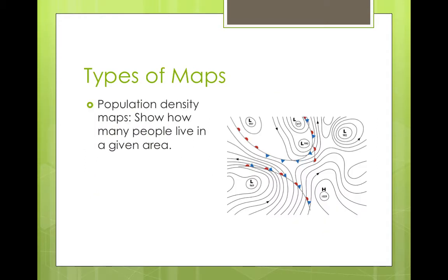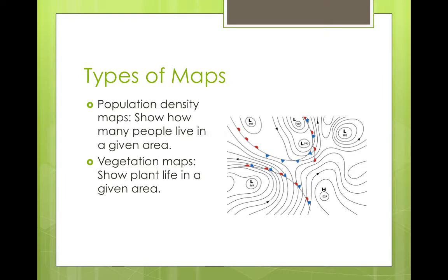There are also population density maps. These show how many people live in a geographic area. There are vegetation maps that show plant life in a given area, and weather maps that show climate patterns in a given area.